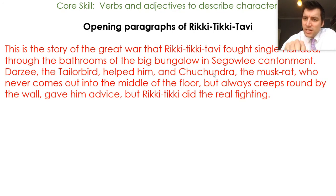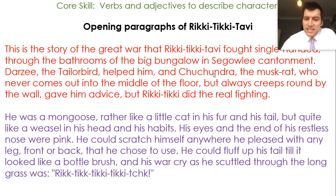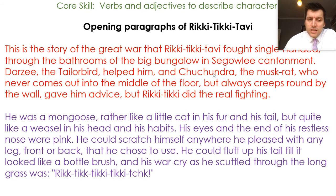The second paragraph then: he was a mongoose, rather like a little cat in his fur and his tail, but quite like a weasel in his head and his habits. So it's quite critical of him — it shows what he looks like but also how he is. He's described as like a weasel, not normally an animal described as a positive. His eyes and the end of his restless nose were pink. He could scratch himself anywhere he pleased with any leg, front or back, that he chose to use. He could fluff up his tail till it looked like a bottle brush, and his war cry as he scuttled through the long grass was rikki-tikki-tikki-tikki-tchk.